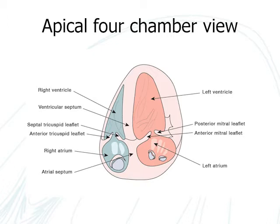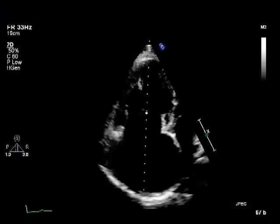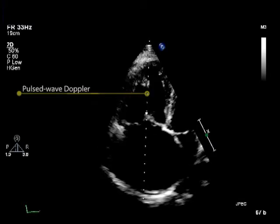Two different views are needed to determine the myocardial performance index using pulsed wave Doppler. Firstly, the apical four-chamber view is used to visualise the tricuspid valve and the tricuspid inflow pattern. This shows the placement of the pulsed wave Doppler cursor, which has to be parallel to the right ventricular inflow.